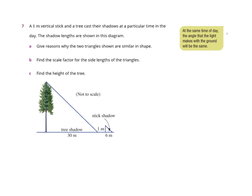So a one metre vertical stick, that's down here if you have a look, casts a shadow at a particular time in the day. The shadow length is shown. So the shadow length is here.